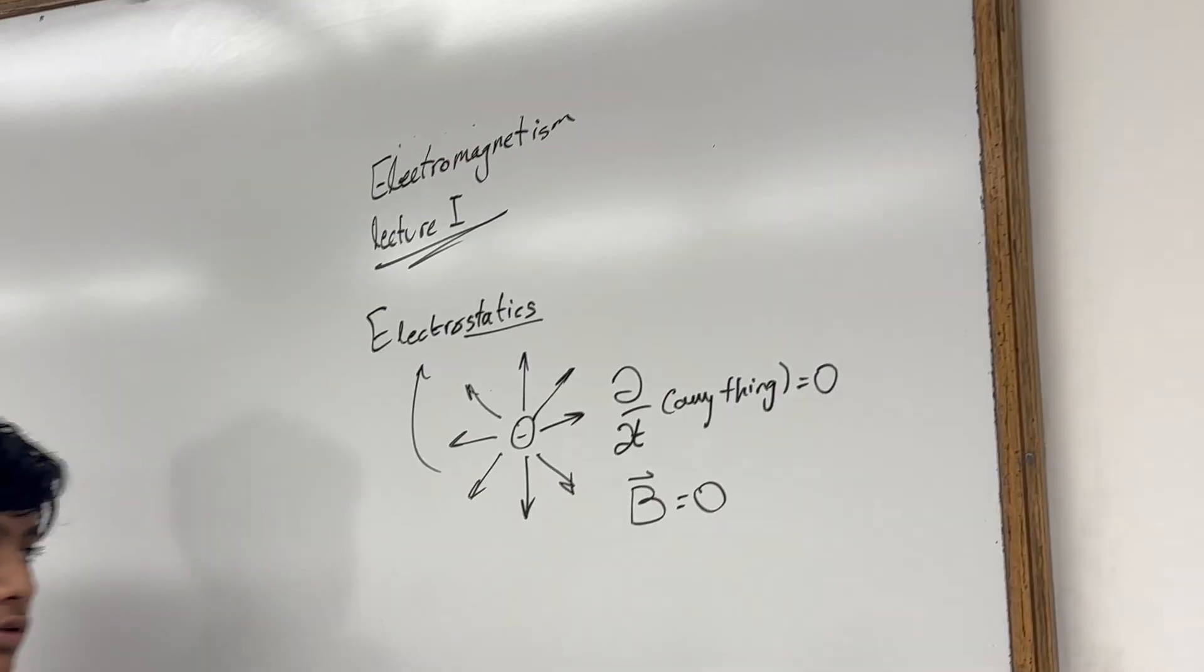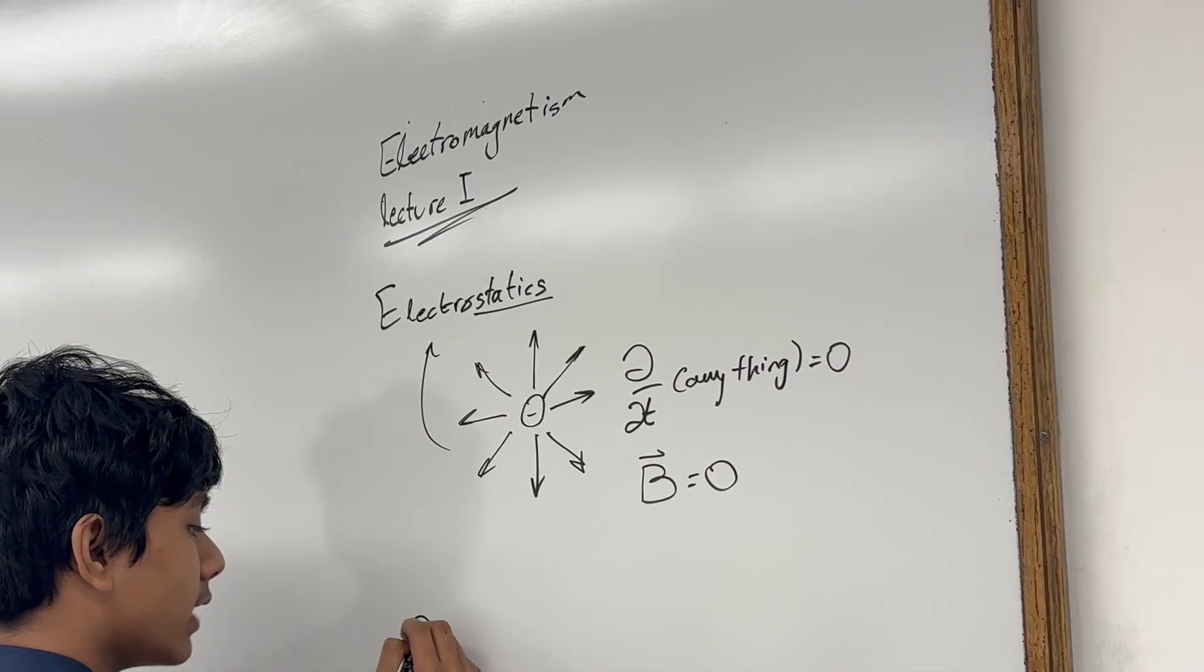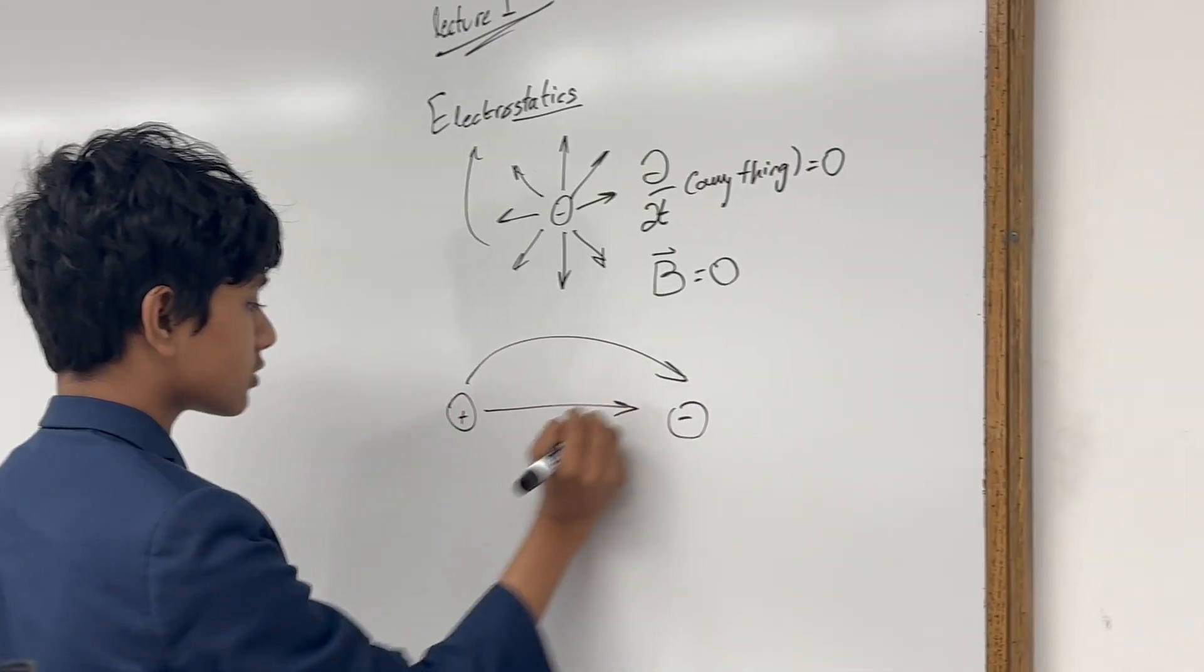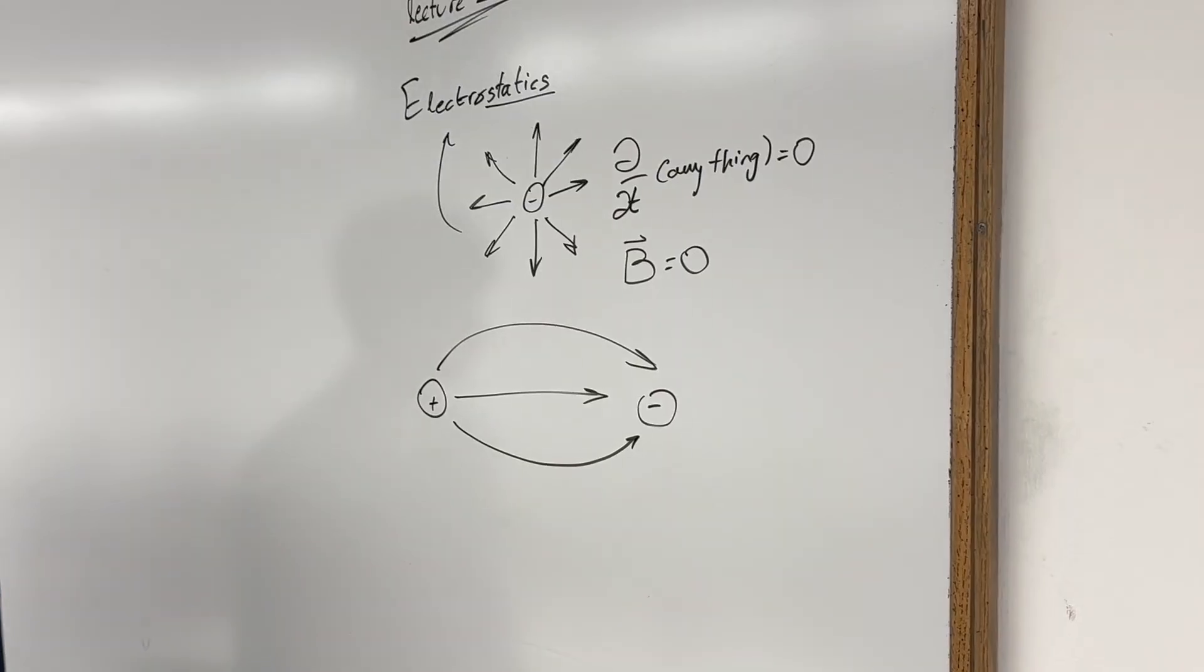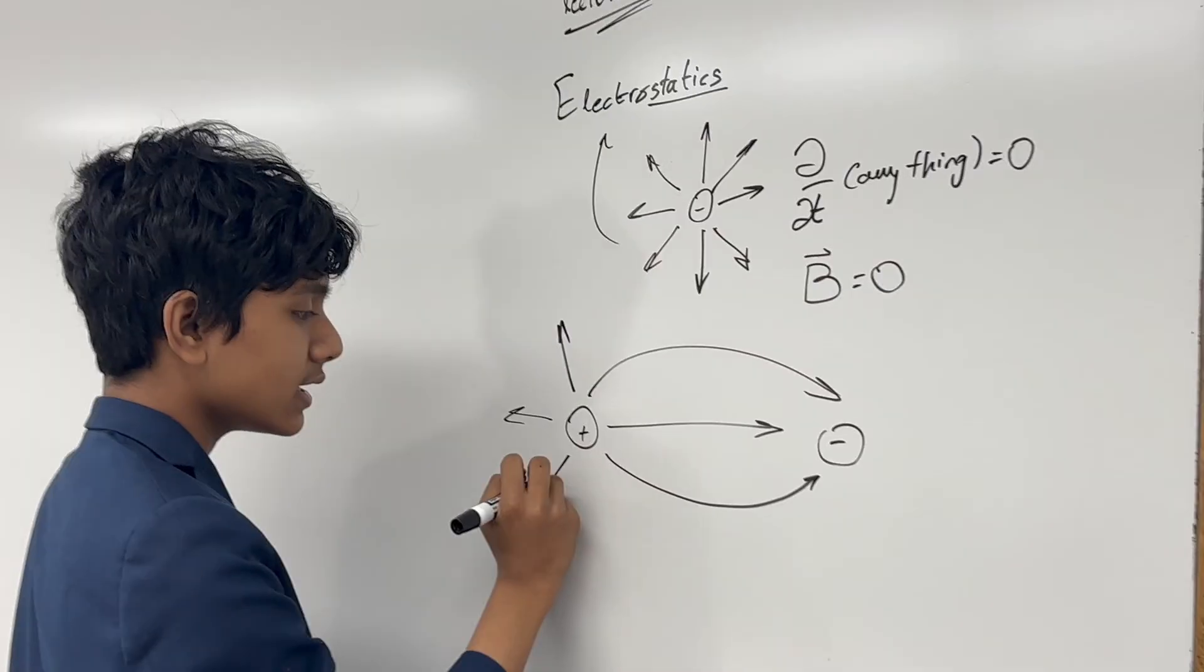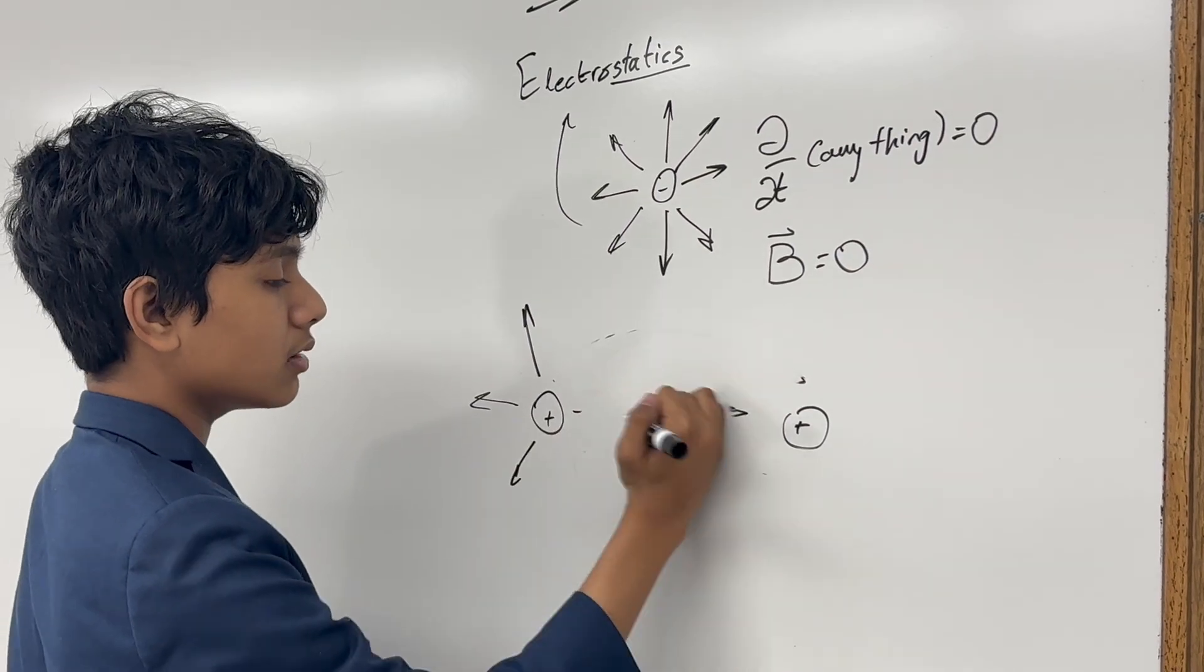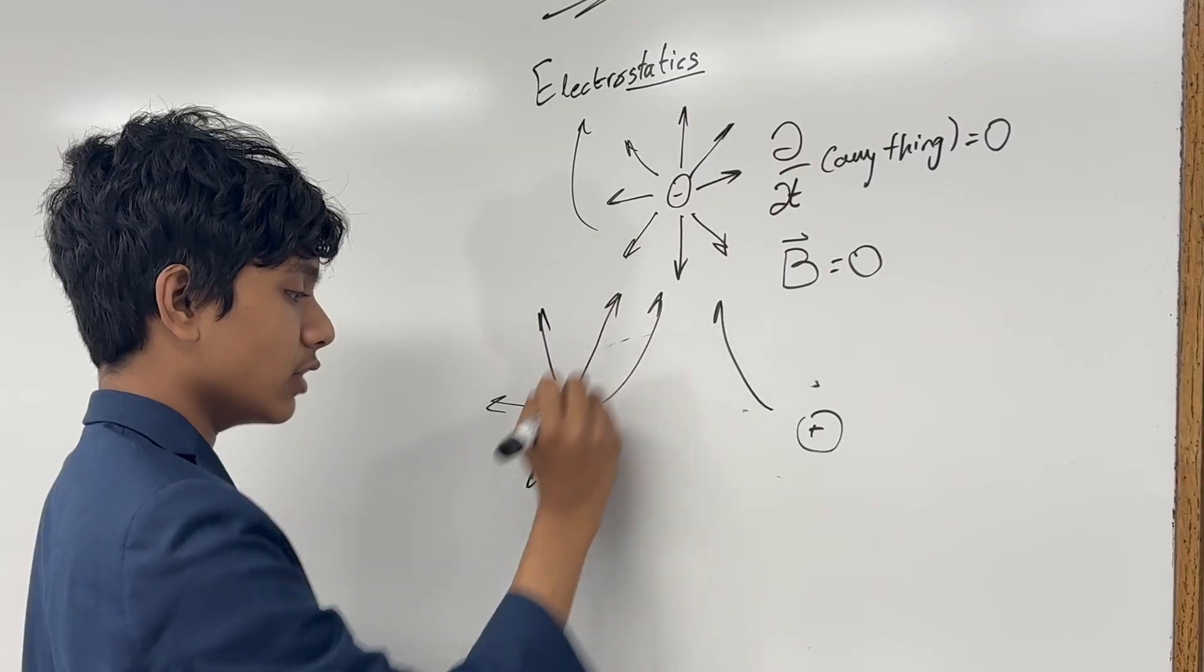But first, what do we mean when we talk about fields? Now, in high school, when drawing these field lines on physics examinations, you might have just learned to go, well, the arrows always point from positive to negative. So the arrows come out from the positive charge, and they go into the negative charge. And if this is a positive charge, they kind of just, something like this. I have no idea why.